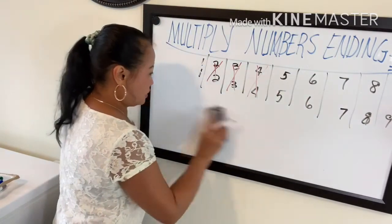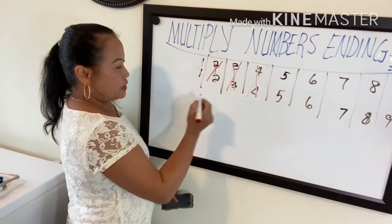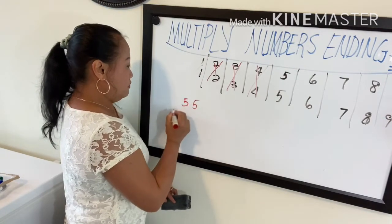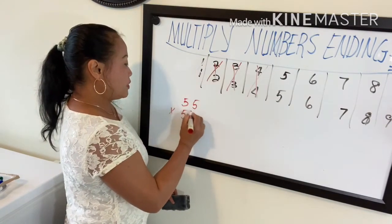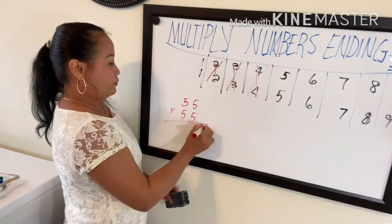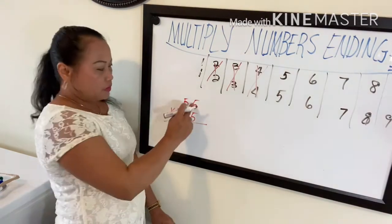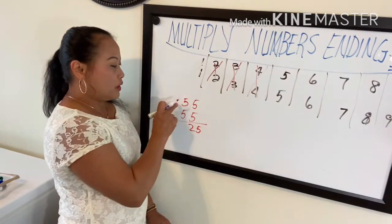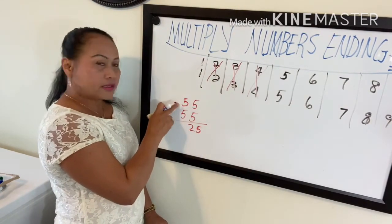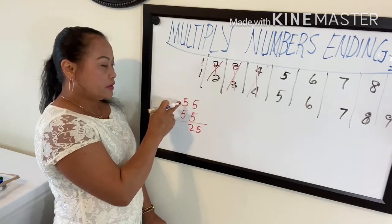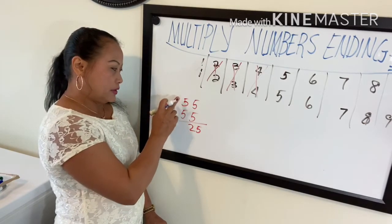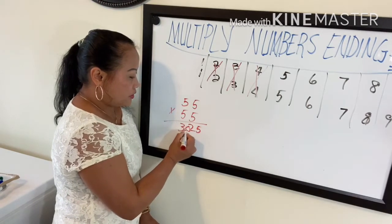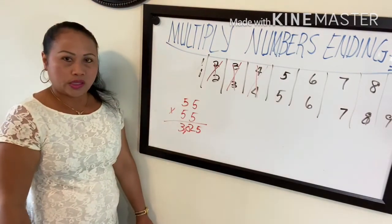Let's erase and do 55 times 55. Five times five is 25, add one to five — five becomes six — and six times five is 30. So the answer is 3025.